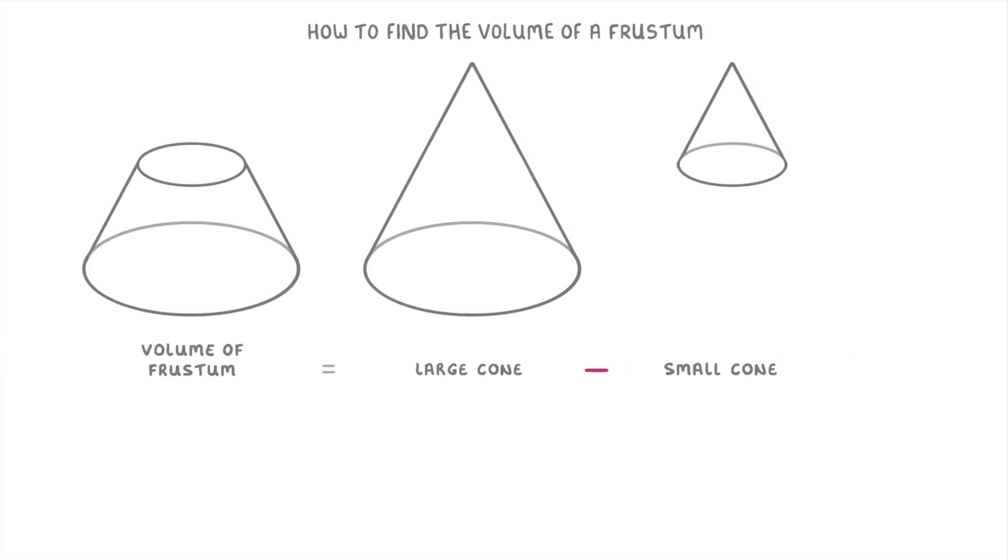This means that to find the volume of a frustum, all you have to do is find the volume of the imaginary larger cone first and then subtract the volume of the imaginary smaller cone.